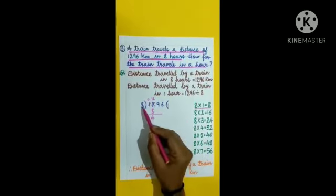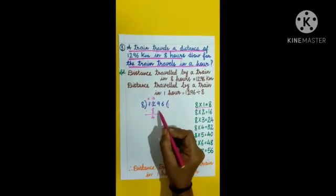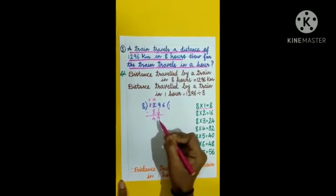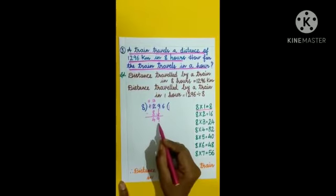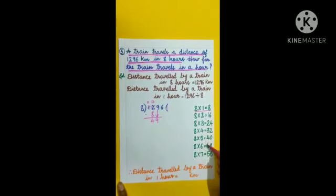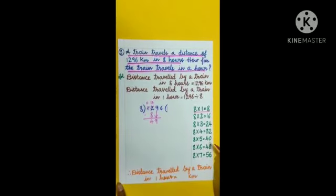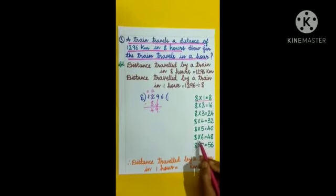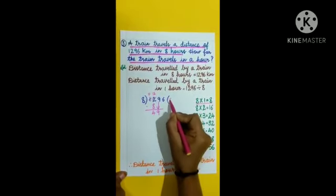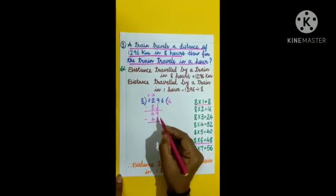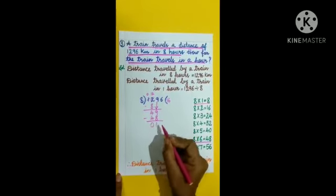4 is lesser than 8, so we consider the next tens place digit, 9. Now the number is 49. Compare 49 with divisor 8: 49 is greater than 8, so we can divide 49 by 8. From the table of 8, the nearest product is 48 (since 56 is greater than 49). We write 6 in the quotient, write 48 under 49, and subtract: 49 minus 48 equals 1. The difference is 1, which is smaller than 8.